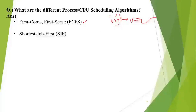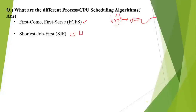Shortest Job First (SJF) says that out of all the processes present in the job queue, we select the shortest job and schedule it on the CPU first — based on the amount of time required by that process. Hypothetically it is possible, but in practice it's difficult to know in advance how much time a process will require. For simulation purposes, we can assume we know the actual completion time of each process.